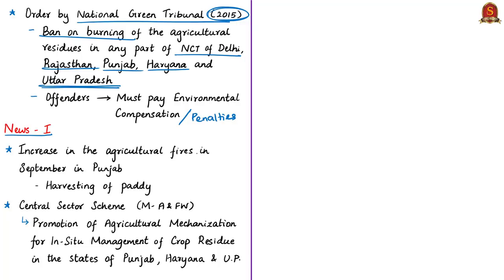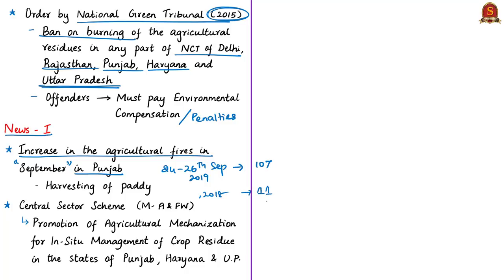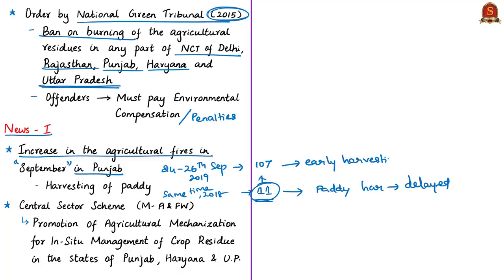The news article states there has been a spike in agricultural fires in Punjab in September — from 24th to 26th September this year there were 107 incidents of stubble burning, whereas the same period last year had only 11. The main reason for fewer incidents last year was that paddy harvesting was delayed due to monsoon conditions extending till end of October. This year, harvesting of basmati rice began earlier, causing the increase.